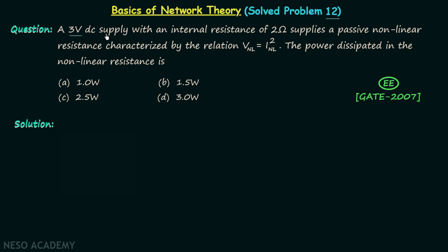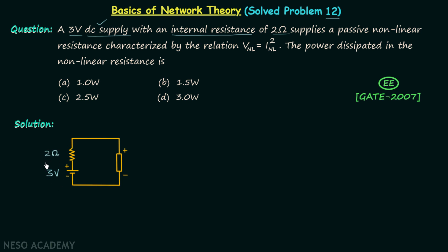We have a 3-volt DC supply with an internal resistance of 2 ohms. In the case of a DC supply, the internal resistance is connected in series, so we have the arrangement with the source providing 3 volts, the internal resistance of 2 ohms, and the source supplying a passive non-linear resistance — represented by a black box — with the characteristic relation V_nL = I_nL², where V_nL is the voltage across the resistance and I_nL is the current through it.